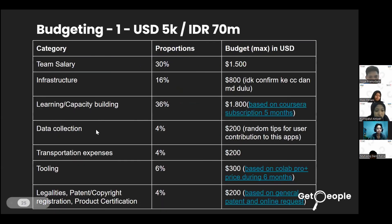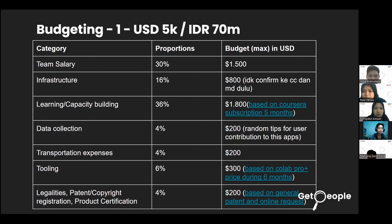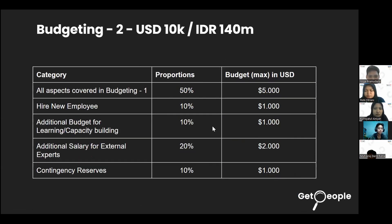If we receive the first funding option of $50,000, the budgeting is essentially the same as before but clustered by category of expenses. Details are available in the presentation slides.